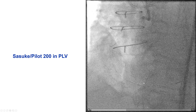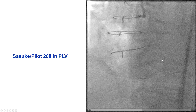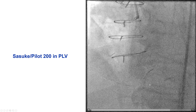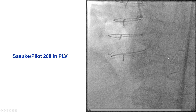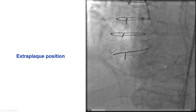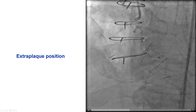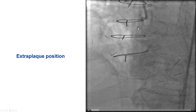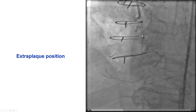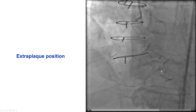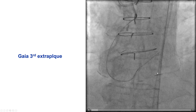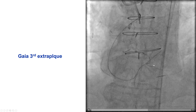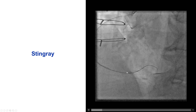We first tried to address the right posterolateral CTO that could be visualized using the ipsilateral collateral from the right. We used a Sasuke dual-lumen microcatheter. We had difficulty advancing a wire, but eventually we were able to advance a Pilot 200 that knuckled into the posterolateral. To avoid extending the dissection, we inserted a microcatheter — this is a Finecross into the ipsilateral epicardial collateral — and what this demonstrates is that actually we're in the extraplaque position. We tried to redirect the Gaia III, but again we were in the extraplaque position.